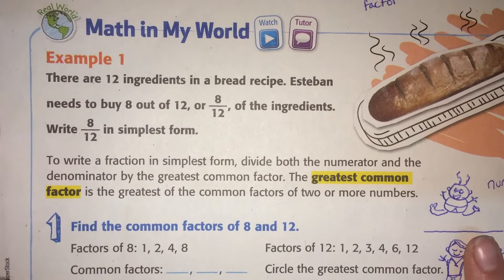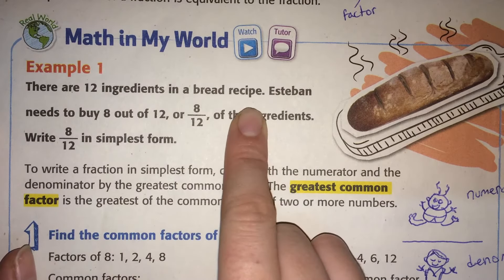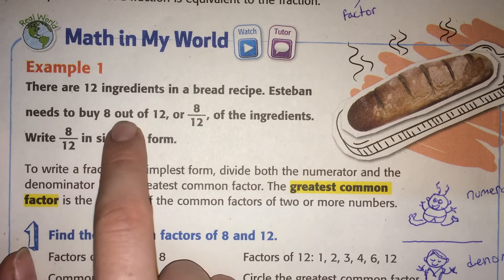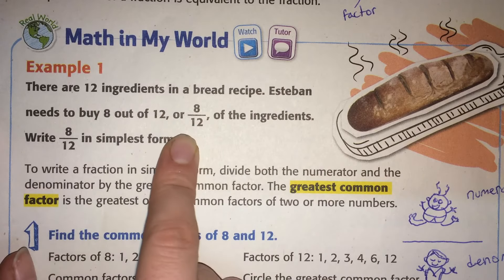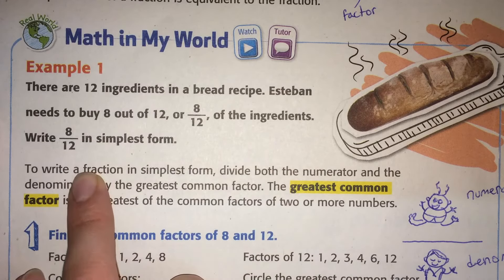Let's try to see what they mean in action. There are 12 ingredients in a bread recipe. Esteban needs to buy 8 out of 12, or 8 twelfths of the ingredients. Write 8 twelfths in simplest form.